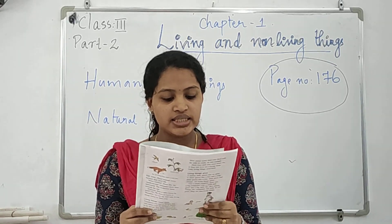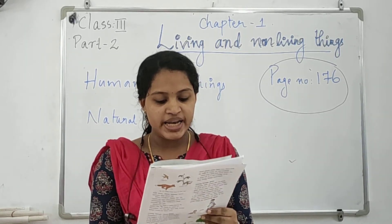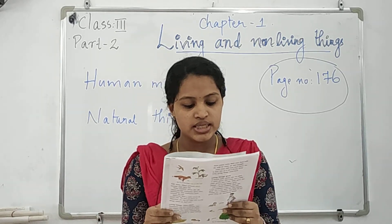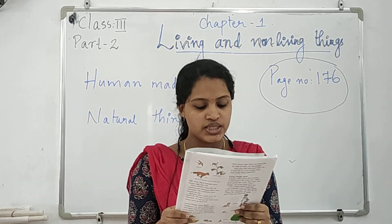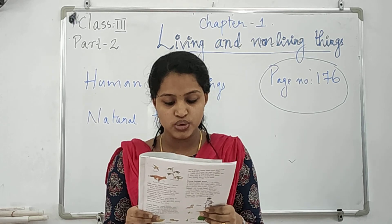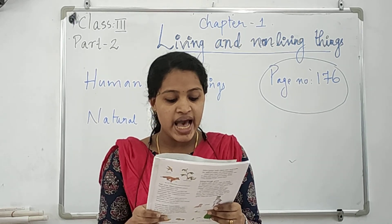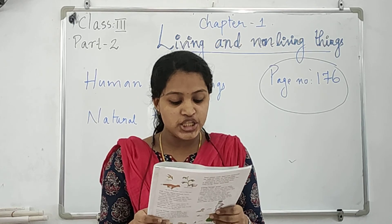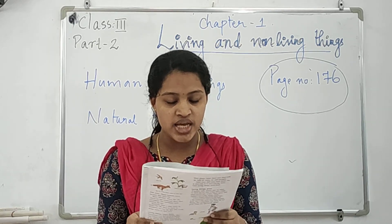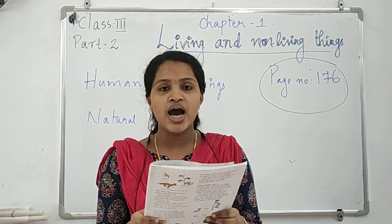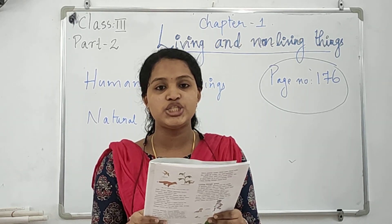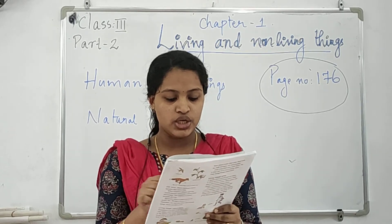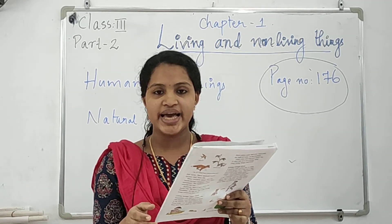To repeat: things like animals, plants, rocks, clouds, the sun, the moon and the stars have not been made by humans. Nature gave these things to us. They are natural things. You please underline those five lines.